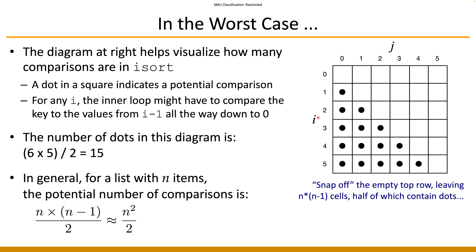When i equals two, you have two spots — j goes from two down to one. Continuing this process, when i equals n minus one, j goes from n minus one all the way down to one. In total, counting all the spots — which represents executions of the innermost statement — you get n minus one times. The summation of all dots is the summation of an arithmetic series.